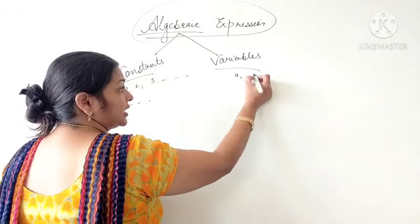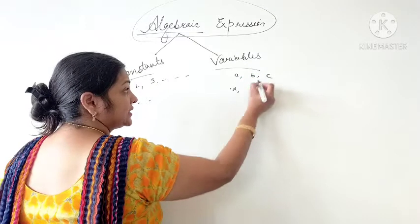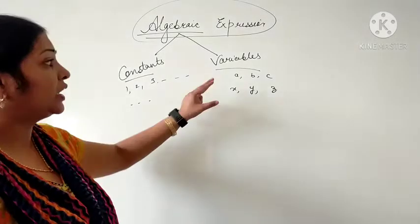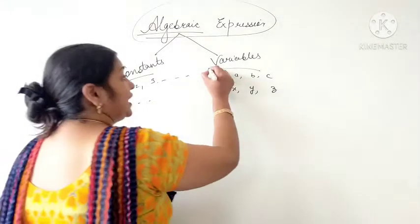And all the alphabets A, B, C, X, Y, Z which can take many values are known as variables.